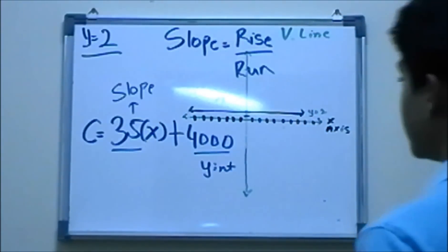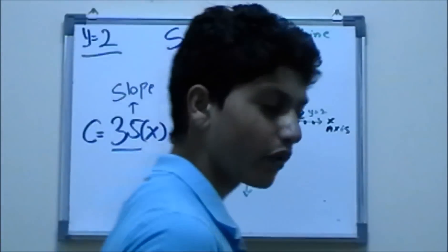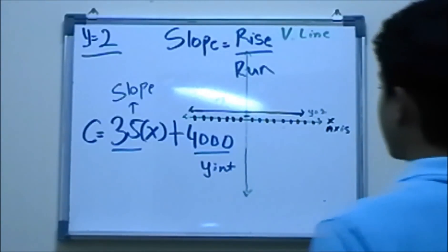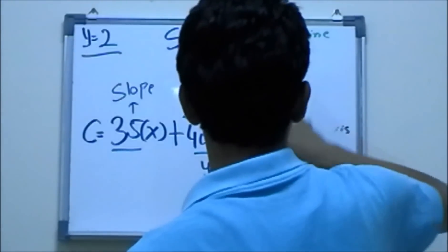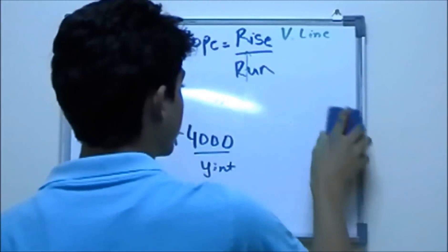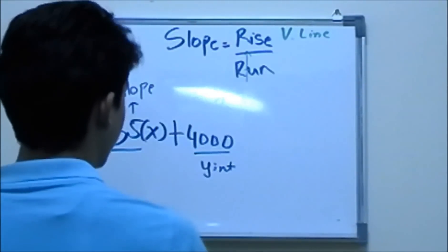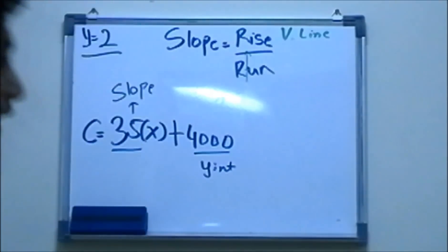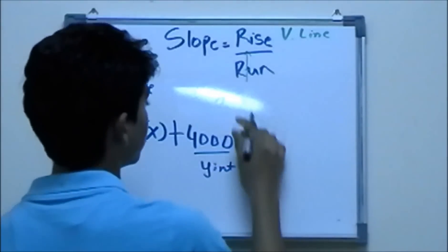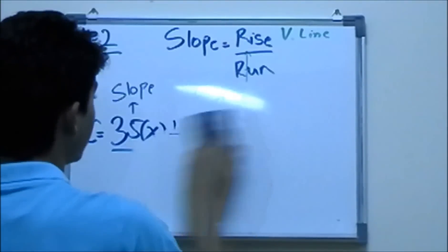Now rise over run basically means that change, because I'm going to teach you pre-calculus first. Let me just write the symbol which represents change in something. If you have a change in something, you have delta. Let me just show you how the delta is derived.